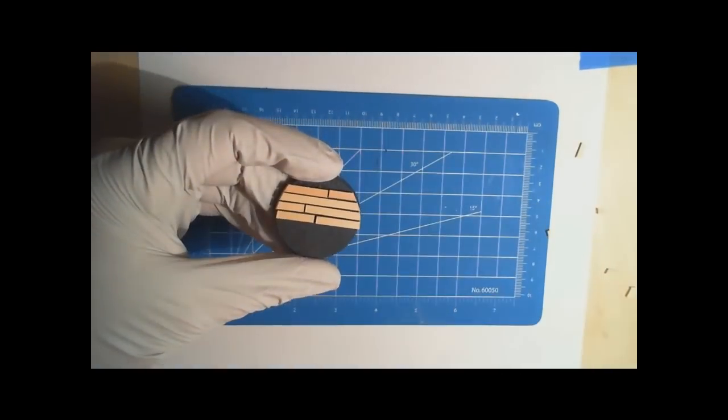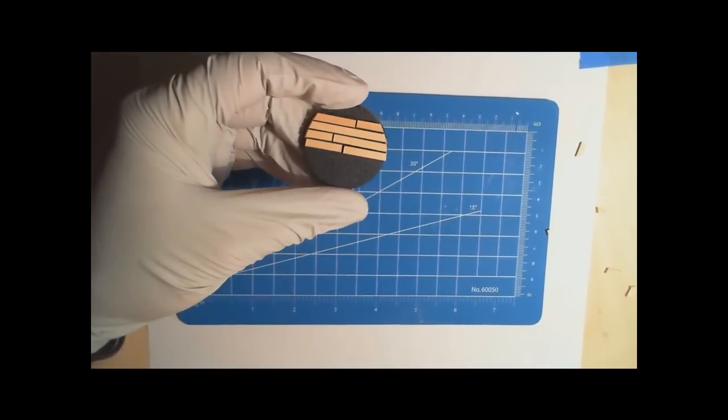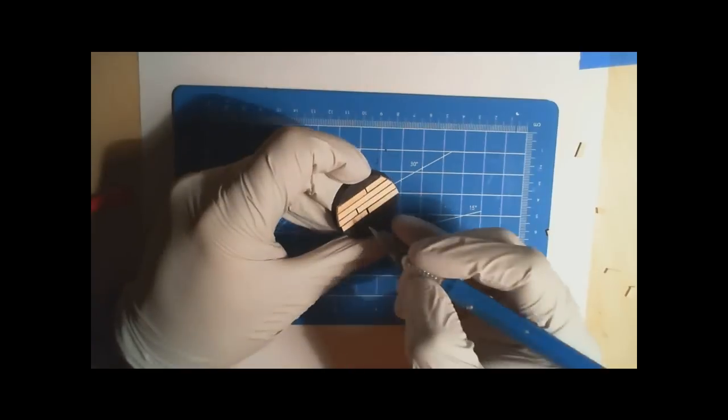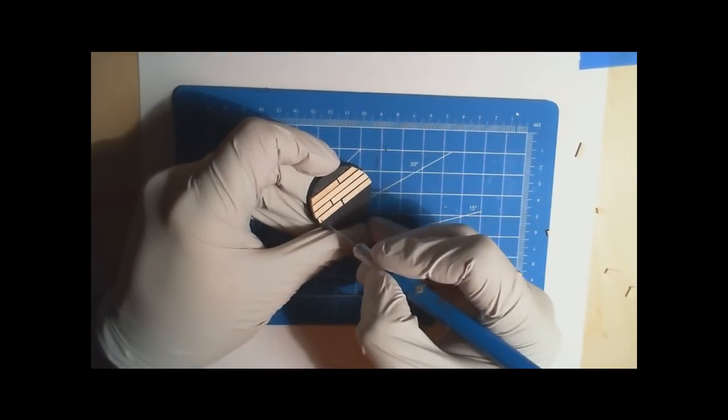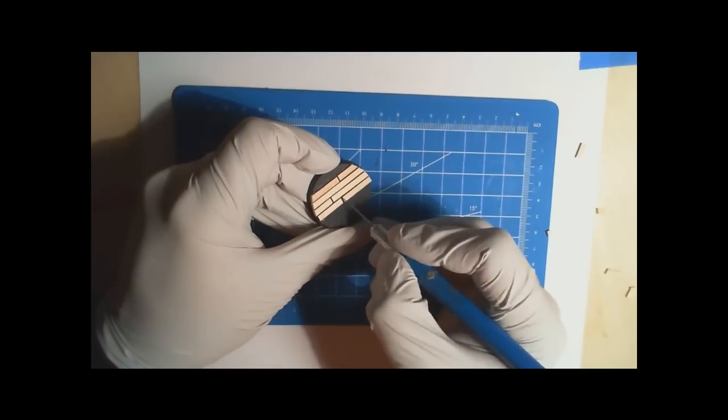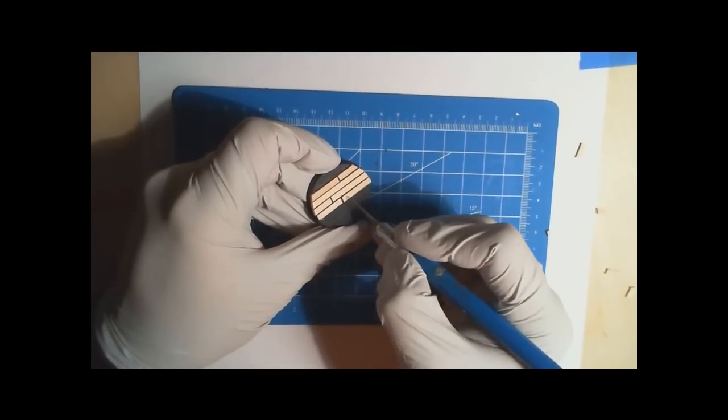Now a couple of things we can do to create some texture on here. The first, of course, is just to take your hobby knife. It's already got a bit of a wood texture, but if you want to exaggerate that a bit, just take your hobby knife, scrape along repeatedly.